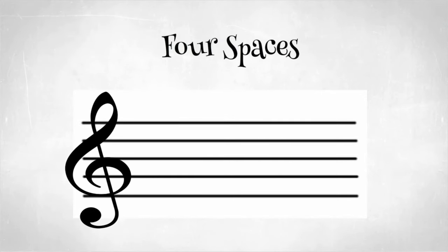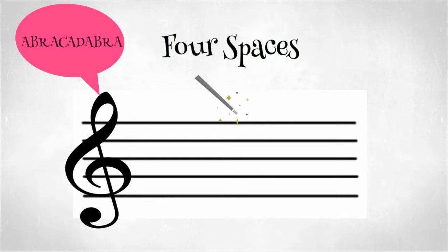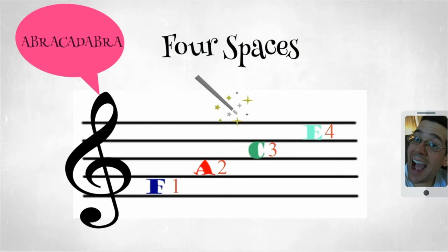Again, the treble clef will use its magical powers and assign a letter to each space found on the staff. Here he gives the spaces the letters F, A, C, and E. Hey, that spells the word face.